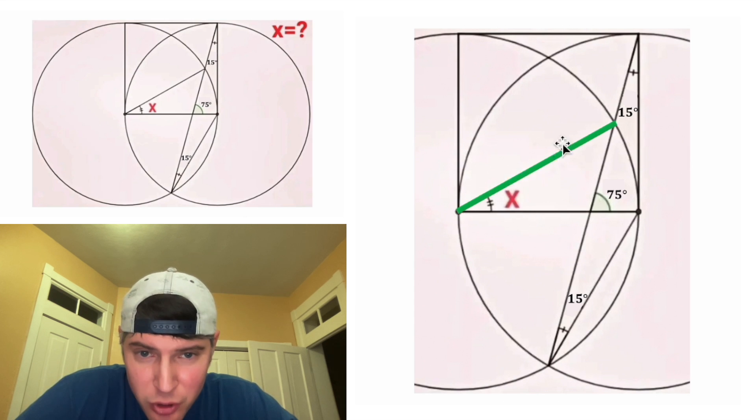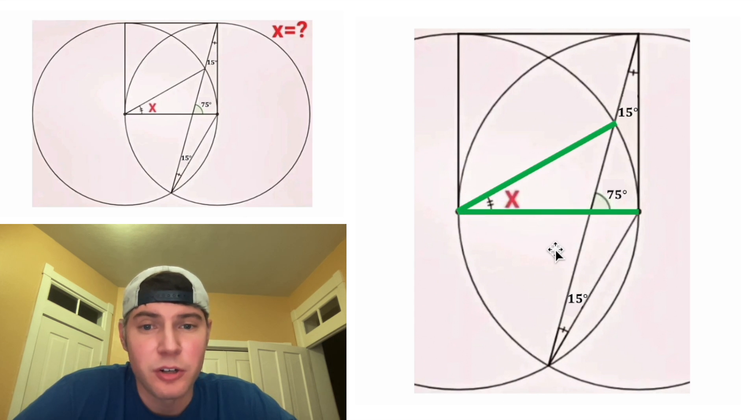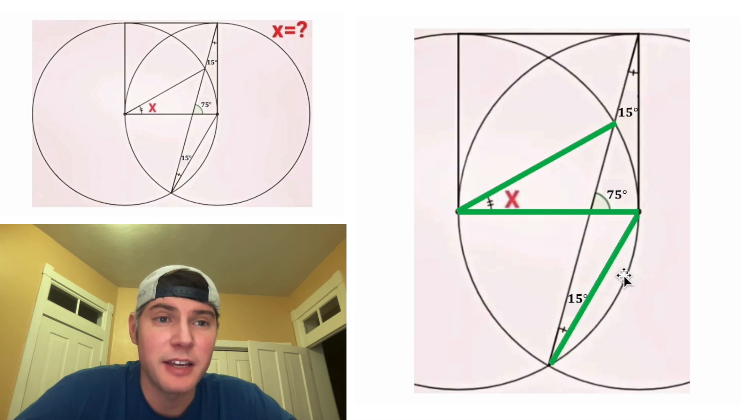Looking at this angle X, it's made up of two radii of this left circle. So these two sides are going to be equal to each other. And then this side right here is a radius of the other circle, but the two circles are the same size. So all three of these green lines are congruent to each other.